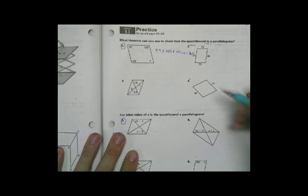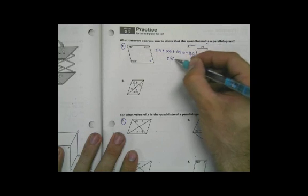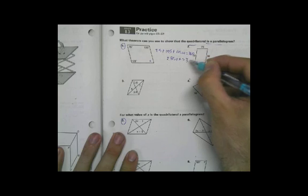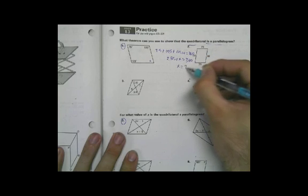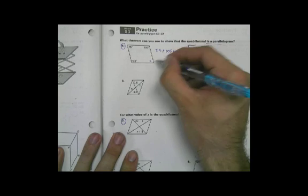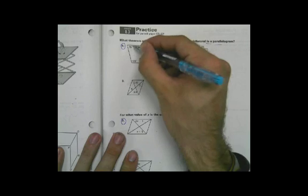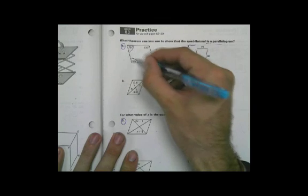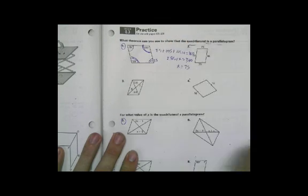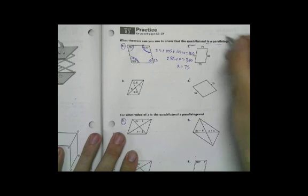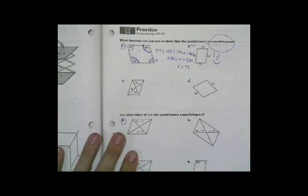75 plus 105 is 285 plus x equals 360 and x equals 75. Sweet! So we have this equals 75, this is congruent to this and this is congruent to this, therefore it's got to be a parallelogram. Nice.